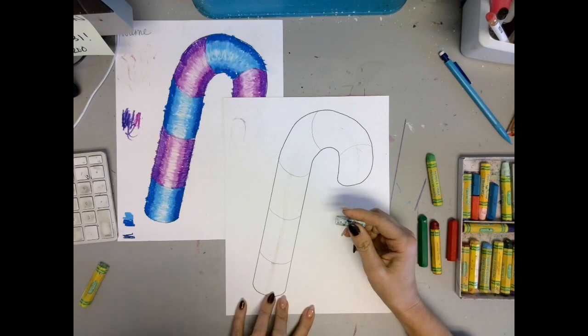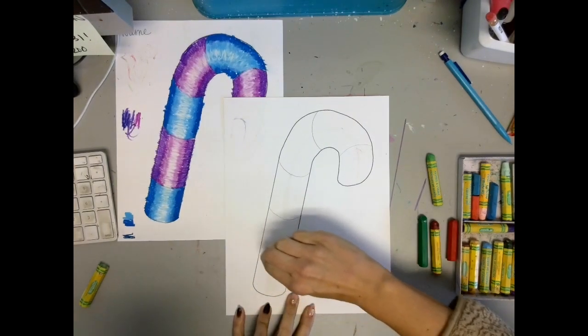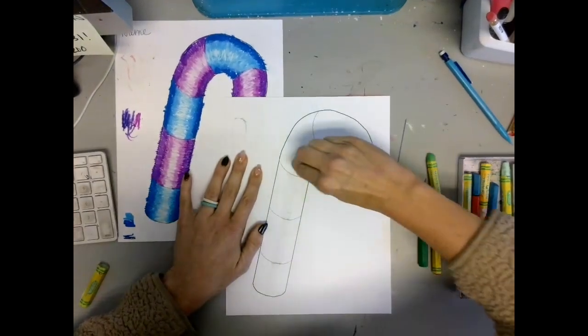After that we blended the line making back and forth motions along the white line that we drew.